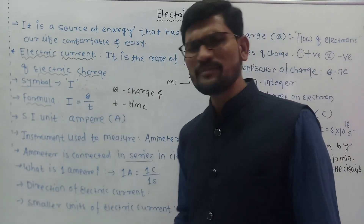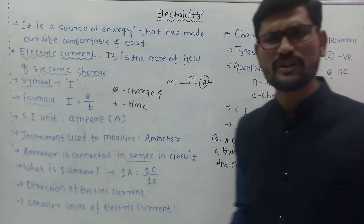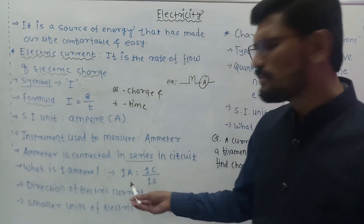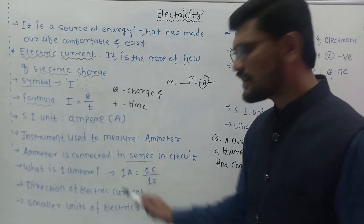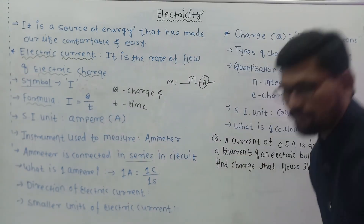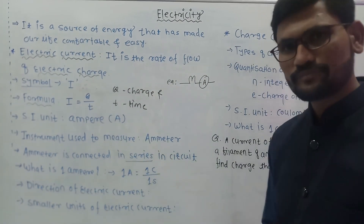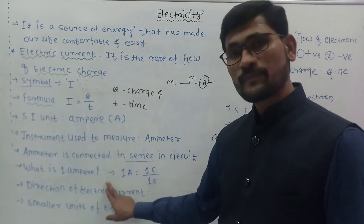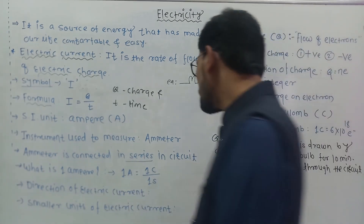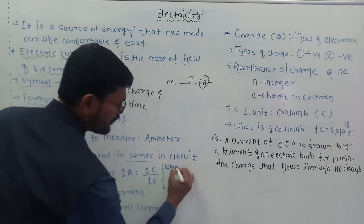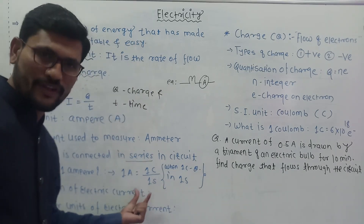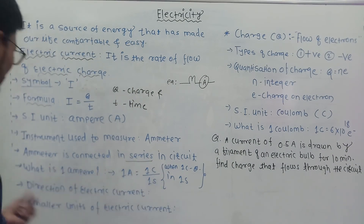Sometimes questions are asked in board or other examinations about the meaning of 1 coulomb or 1 ampere. To define 1 ampere: 1 ampere = 1 coulomb / 1 second. From the formula, Q has units of coulomb and T has units of second. So 1 ampere means when 1 coulomb of charge flows through a point in 1 second, that is called 1 ampere.